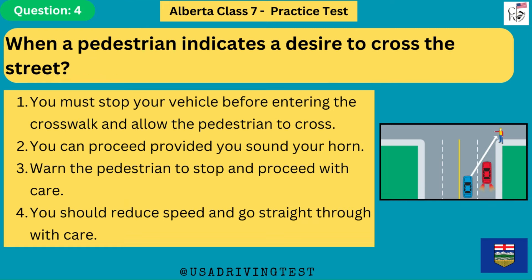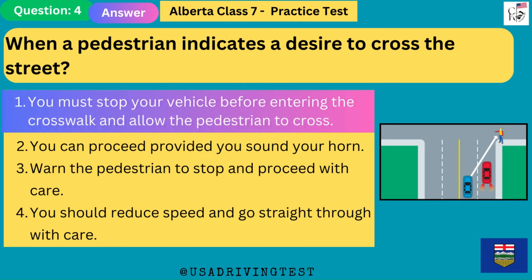When a pedestrian indicates a desire to cross the street: 1. You must stop your vehicle before entering the crosswalk and allow the pedestrian to cross. 2. You can proceed provided you sound your horn. 3. Warn the pedestrian to stop and proceed with care. 4. You should reduce speed and go straight through with care. The answer is 1: you must stop your vehicle before entering the crosswalk and allow the pedestrian to cross.